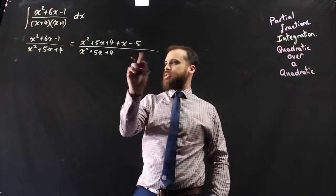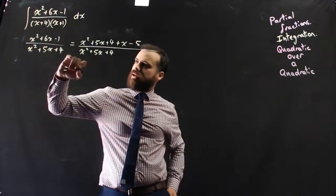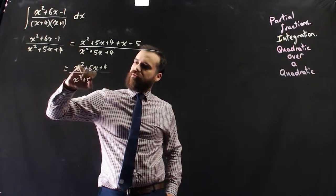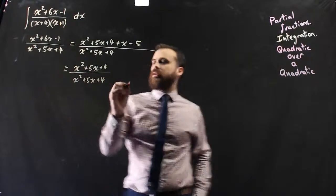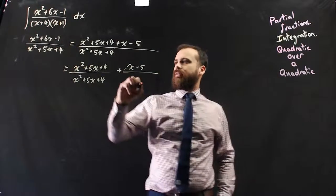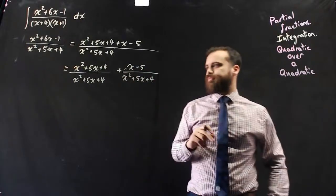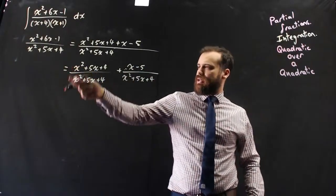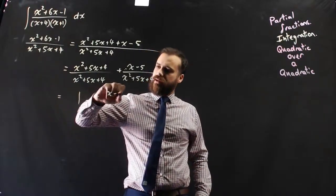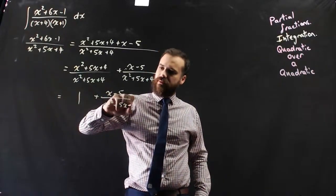But what it allows me to do is break this up now into x squared plus 5x plus 4 over x squared plus 5x plus 4, plus x minus 5 over x squared plus 5x plus 4. Now, this is top and bottom the same, so now we've got 1 plus x minus 5 over x squared plus 5x plus 4.